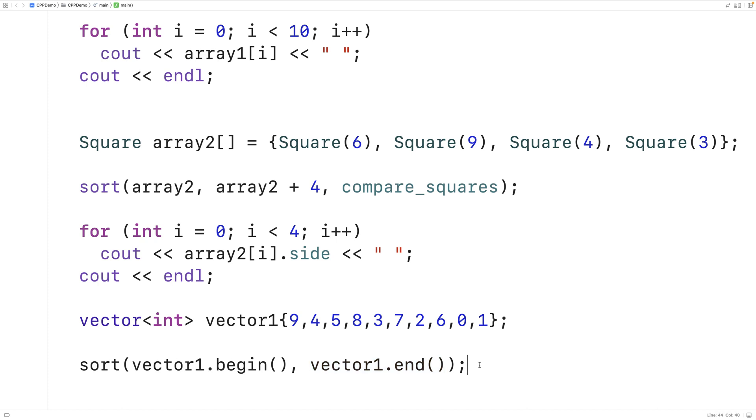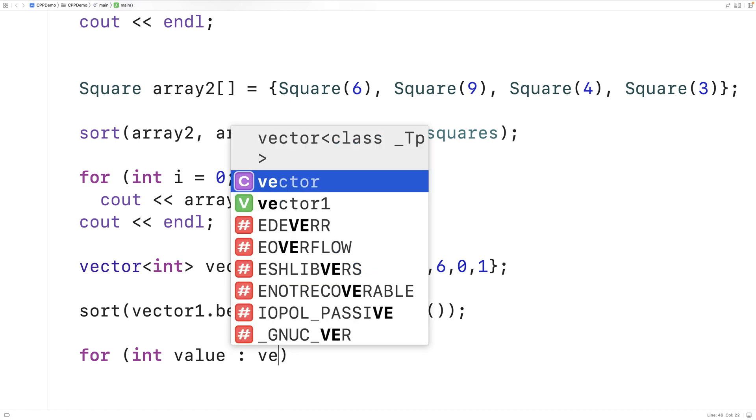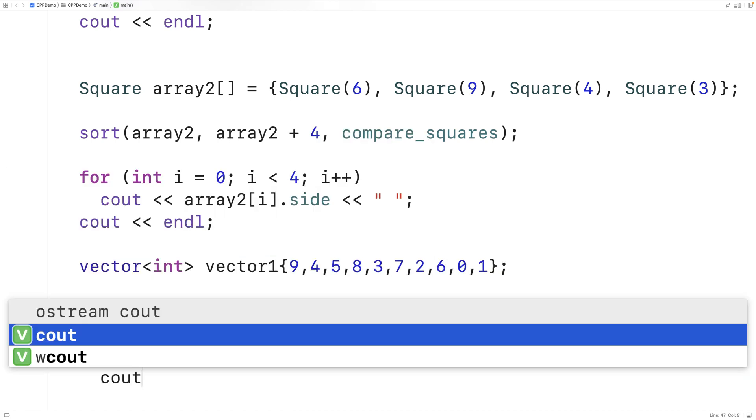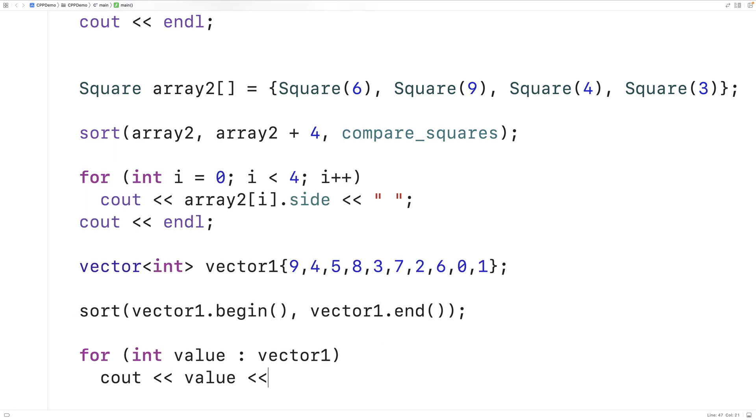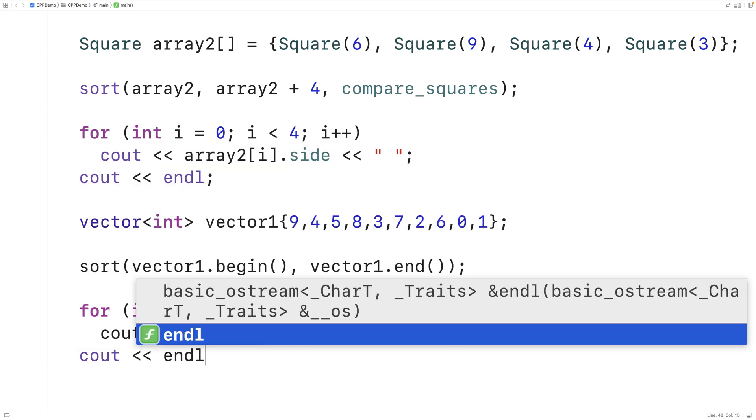Let's print out the vector once we're done. We'll say for int value colon vector1. And we'll output each value in the vector followed by a space. And when we're done, we'll output an end line.